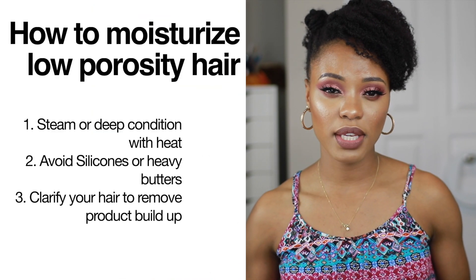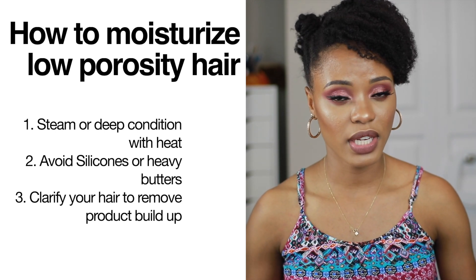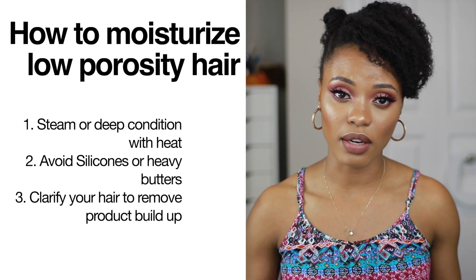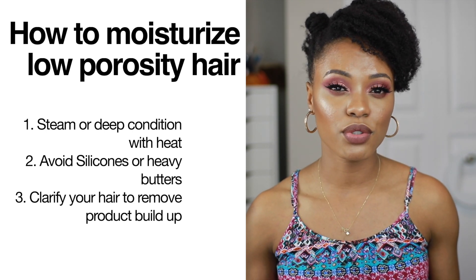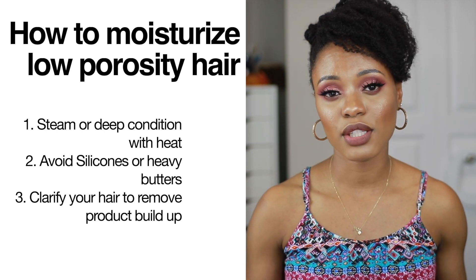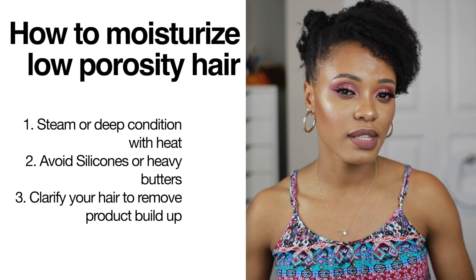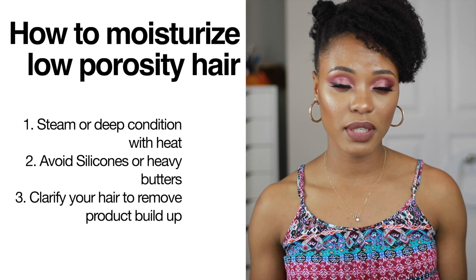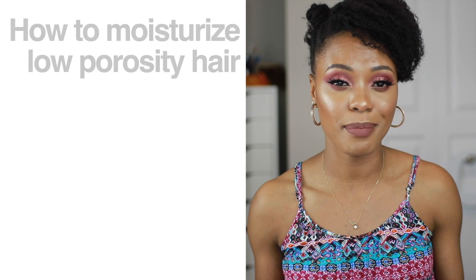Now let's move on to tips for moisturizing based on your porosity level. For low porosity hair: steam your hair or add heat when deep conditioning to help open your cuticles so products can actually get absorbed. Avoid silicones, heavy butters, and thick oils since low porosity hair is prone to buildup. Try lighter oils such as grapeseed oil, avocado oil, or almond oil. Also clarify your hair frequently — maybe once a month or every two months — to remove product buildup. You'll know you have buildup if your hair feels limp or your scalp is flaky.